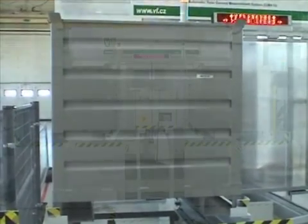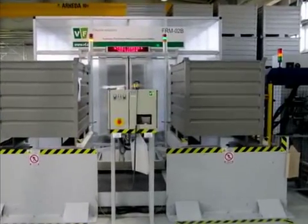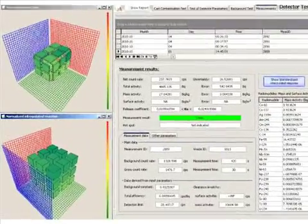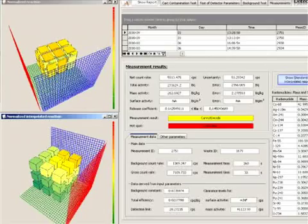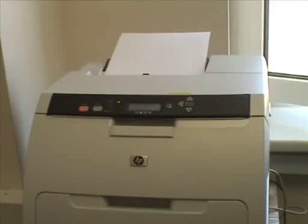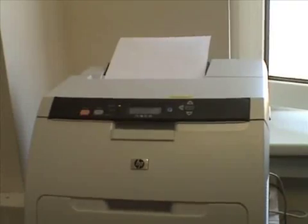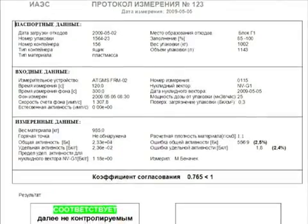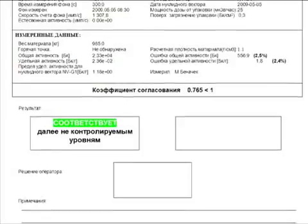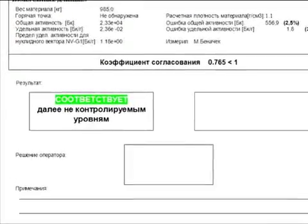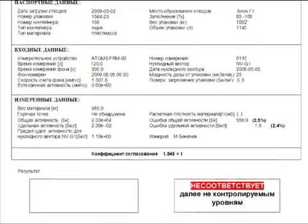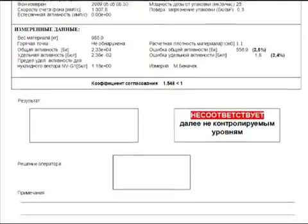As soon as the tested container is returned to its initial position, the label on the container positioned on the other trolley may be read and the next measurement process may be started. Results of the total gamma activity measurements, as well as calculations of specific and volumetric activities, are recorded in the database and shown in the measurement report. Such reports indicate the results of specific and volumetric activity calculations as well as the factor corresponding to the requirements stated in the environmental regulatory document. The report may also contain either the corresponds to free release levels stamp or the does not correspond to free release levels stamp.